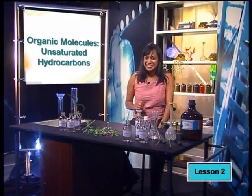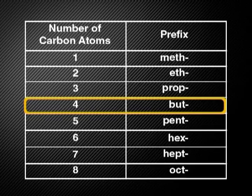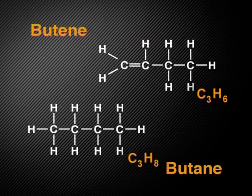Try to follow these two easy steps to name the next compound. First, look at the number of carbons for the first part of the name, followed by the part that tells us how the carbon atoms are bonded. Four carbon atoms make the name start with bute-, and the double bond means the molecule's name ends in -ene. Butene may sound similar to butane, but butene has fewer hydrogen atoms than butane — so butene is an unsaturated hydrocarbon, while butane is a saturated hydrocarbon. In unsaturated molecules, we can break their double or triple bonds to attach more atoms.